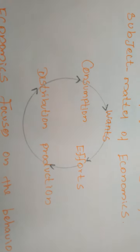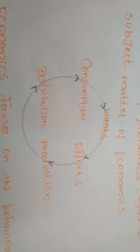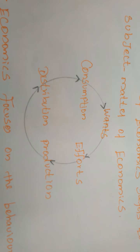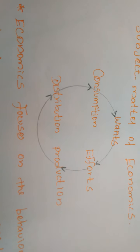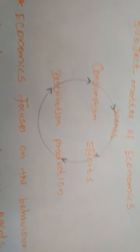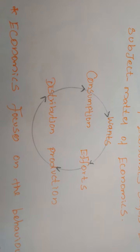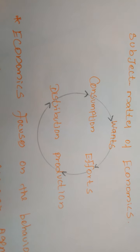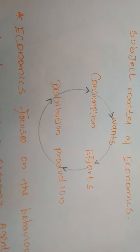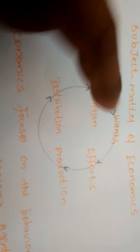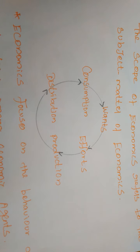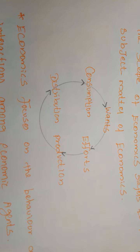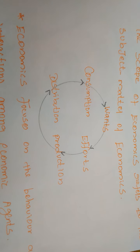Looking at the diagram, there is a circle representing the subject matter of economics. The components are: wants, efforts and production, distribution, and consumption. Wants is the basic point of all economic activities — all economic activities have one of the human wants as their foundation.